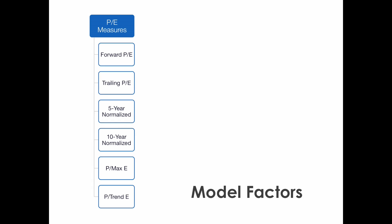Let's take a look at the factors currently in the model. We divide them into four categories. The first category is price-to-earnings ratios — we have six different factors, and the difference between them is in the definition of earnings. At the top is the forward PE, which uses estimated earnings over the next 12 months. The other five factors use a historical definition of earnings, and some normalize earnings to remove cyclicality due to the economic and business cycle.